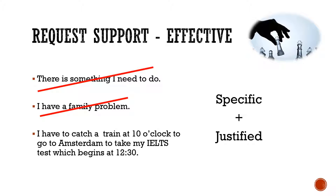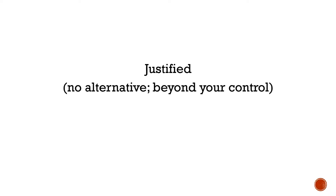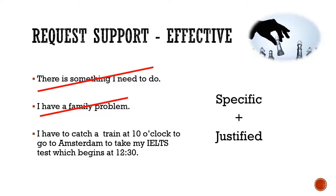'I have to catch a train at 10 o'clock to go to Amsterdam to take my IELTS test, which begins at 12:30.' This is specific, but it is not justified. Justified means there is no alternative — it's beyond our control. Taking your IELTS test during class in Amsterdam is under your control; it is your choice. You do have an alternative: you can take another test. So we say this is not justified.